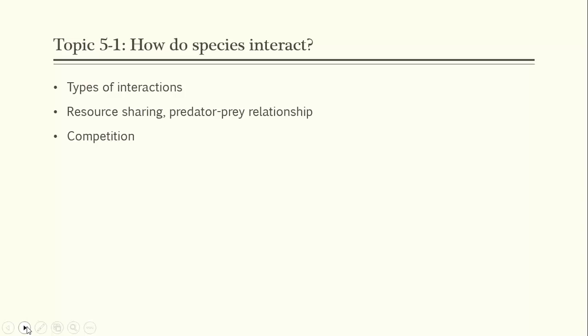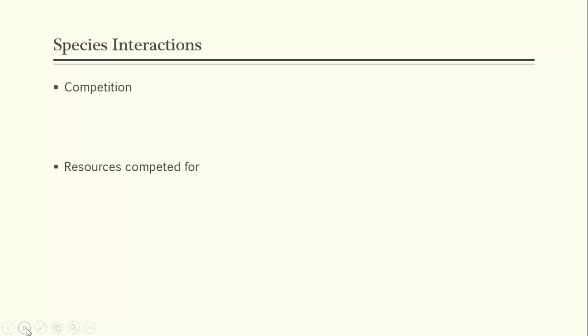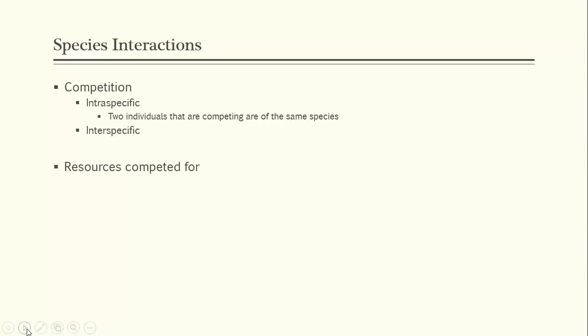Competition arises when two individuals, whether of the same species or different species, are competing for resources in the environment. When the two competing individuals are of the same species, this is called intraspecific competition — within the same species. When they are of different species, it is called interspecific competition. The resources competed for can include food, air, shelter, sunlight, and various other factors necessary for life.